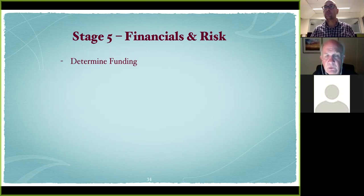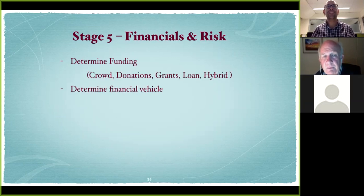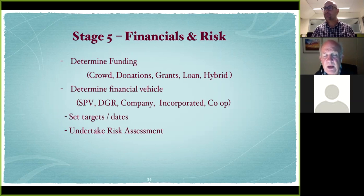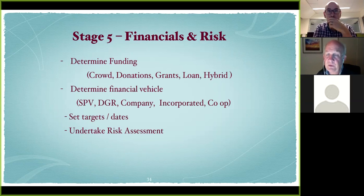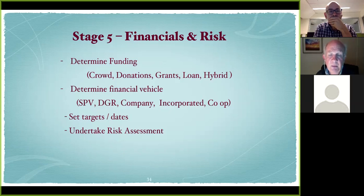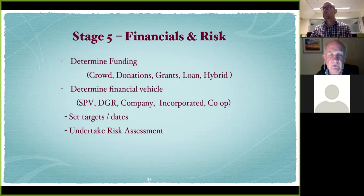They work out how to fund the project. They've done their own crowdfunding — not through Pozible or GoGet — as well as donations and grants. On the last project they also took a small $10,000 loan to test their power purchase agreement with the bank, which accepted it. If they go back for $100,000 next time, the bank can see the agreement has been tested and that repayments are being made. This is a hybrid model. They then decide on the legal vehicle: crowdfunding, revolving energy fund, special purpose vehicle, DGR-status organisation for tax-deductible donations, incorporated association, or a co-op. BSG is itself an incorporated association. They set dates and targets and undertake a fairly extensive risk assessment covering technical feasibility, high wind areas, and panel security — working with the council through that assessment.